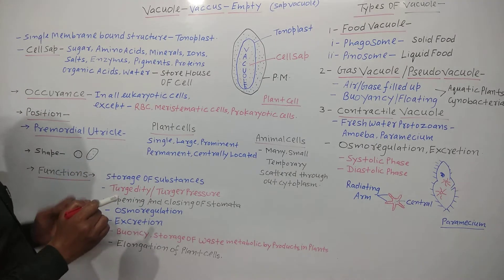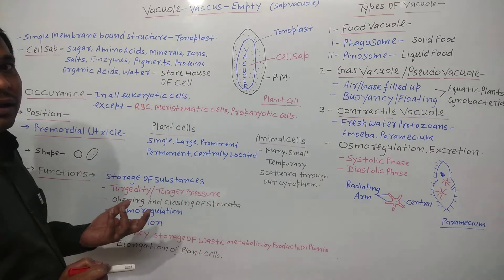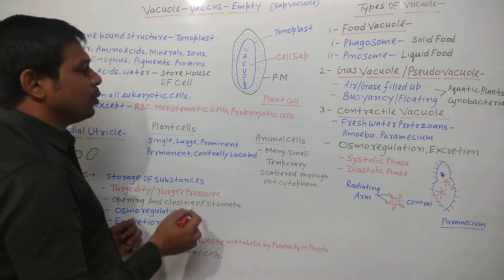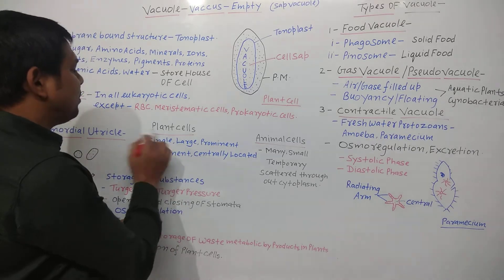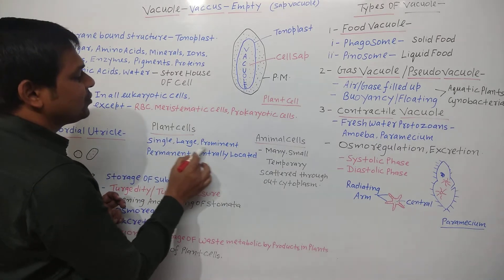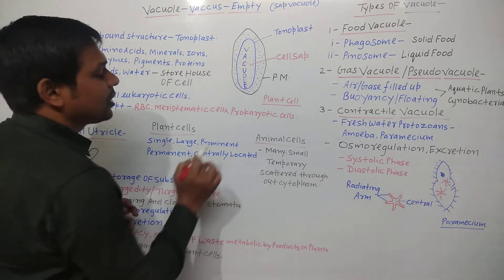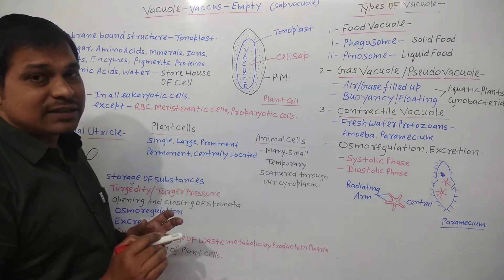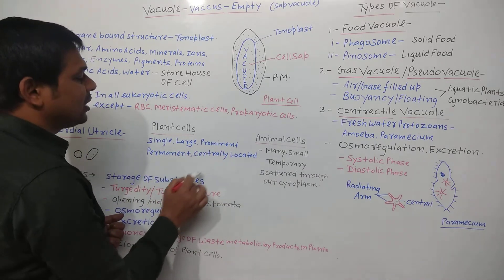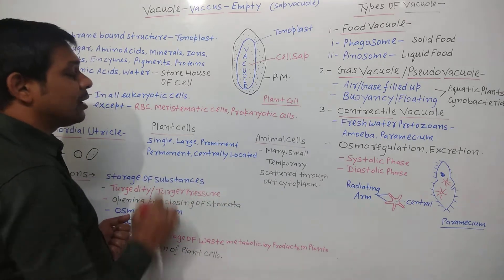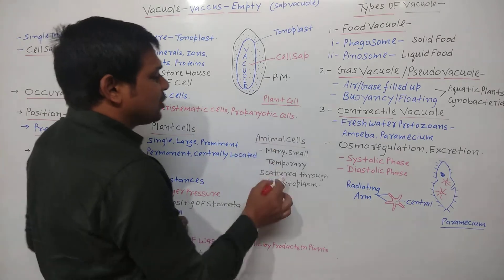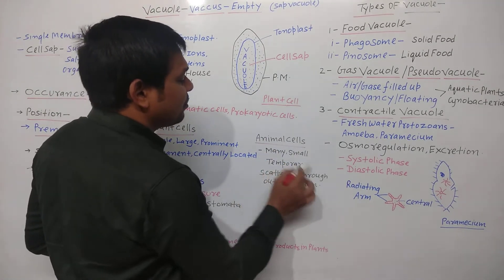Vacuoles are generally spherical, oval, rounded, or elongated sack-like structures. Comparing vacuoles in plant and animal cells: in a mature plant cell, there is generally a single, large, prominent, and permanent centrally located vacuole, and it occupies approximately 90% of the volume of the cell.